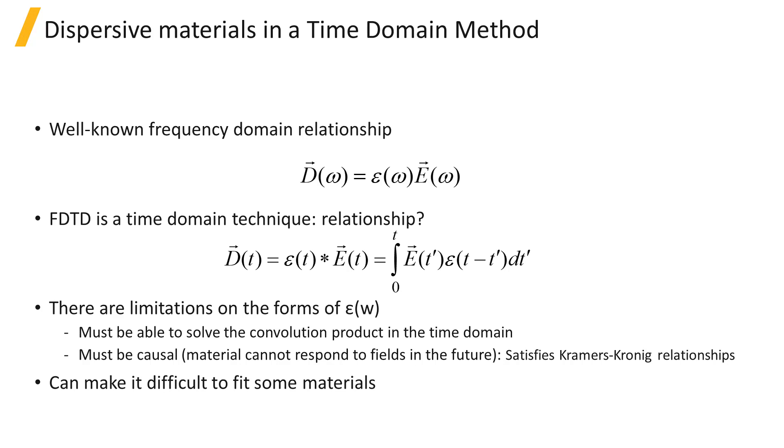However, there are some restrictions to the types of functions that can be solved, and these include restrictions due to stability and causality. For example, you can't have a result at a point in time depend on an electric field from a future time.